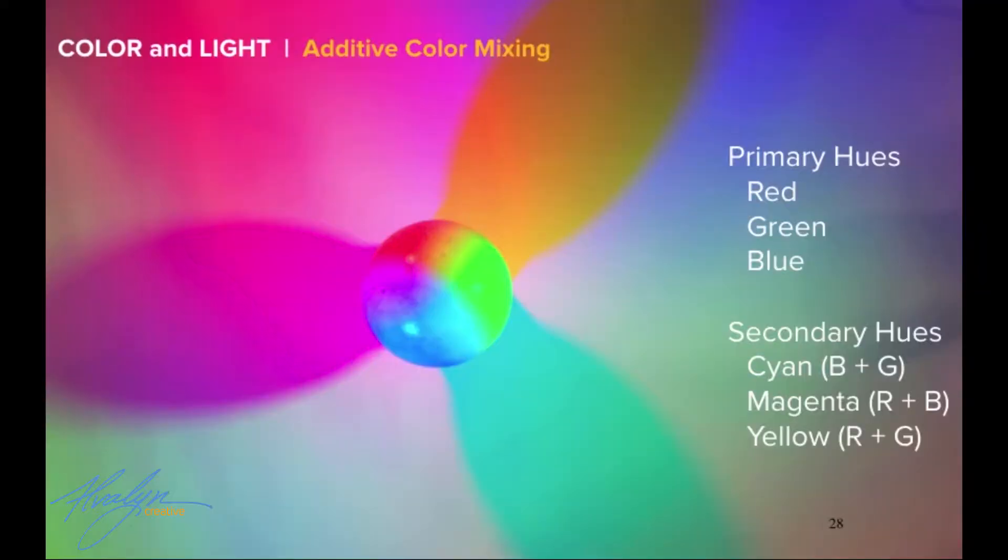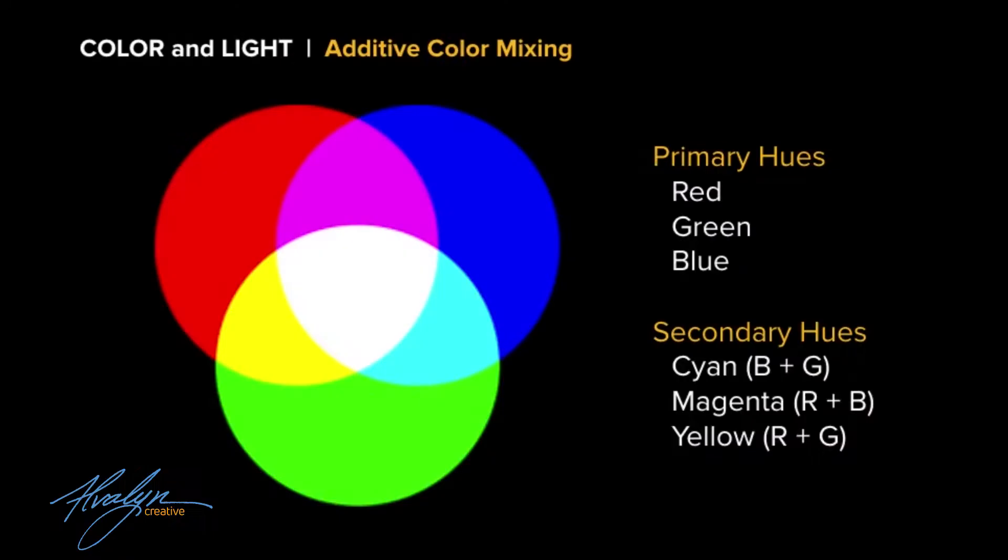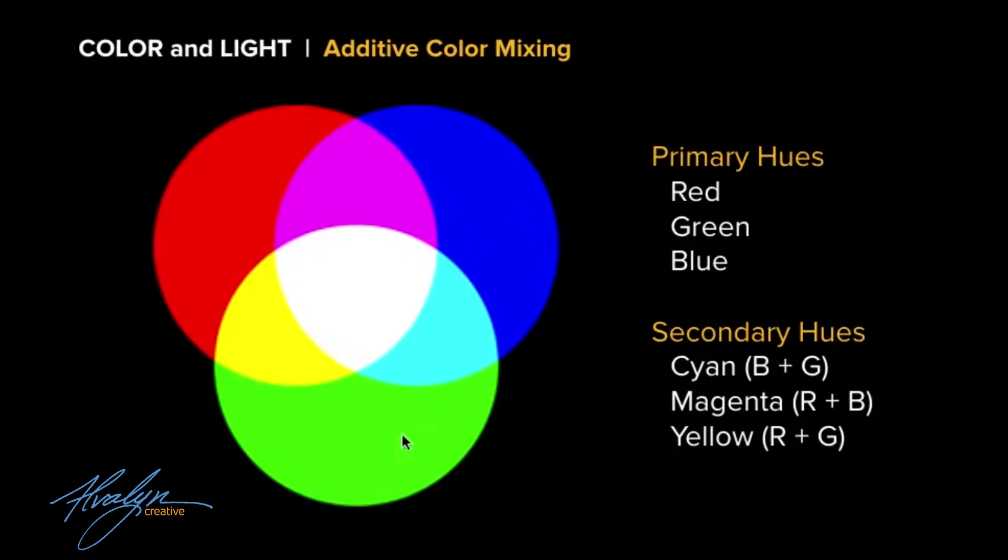So additive color mixing is just basically the blending of light. When you mix everything together, not just a primary with a primary, but you mix all three primaries together, the result is white. So everything adds up to all of the visible light spectrum.